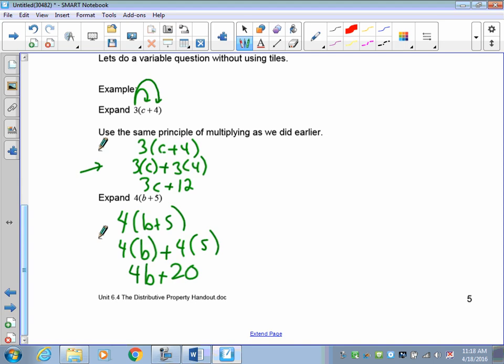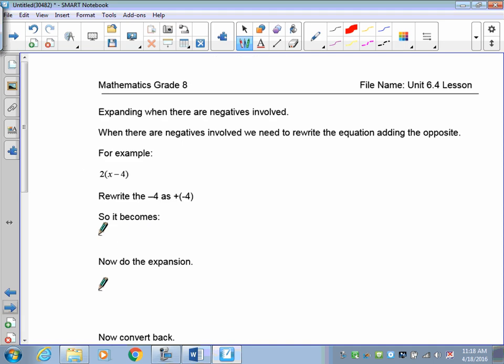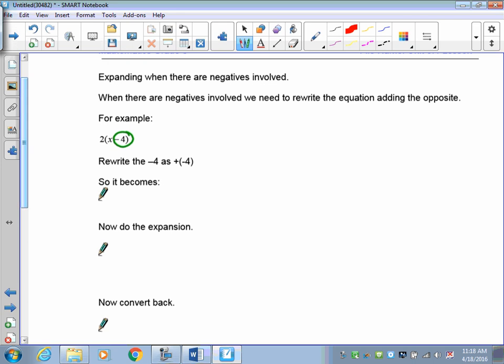So let's get started with negatives now. When there's negatives involved, you have to think of subtract 4 as a negative number. Okay? So you could rewrite this and we get 2 onto x plus negative 4. You can think of it that way. Some people, they just do it in their head. And they know this is x minus 4, they just know that this negative, this subtract, is part of this negative 4.